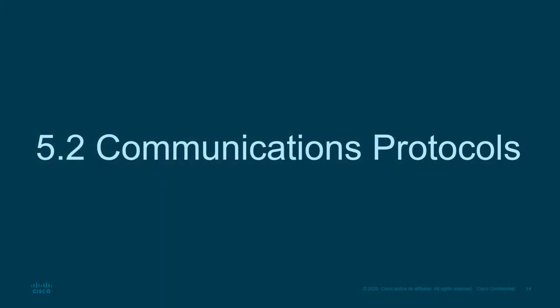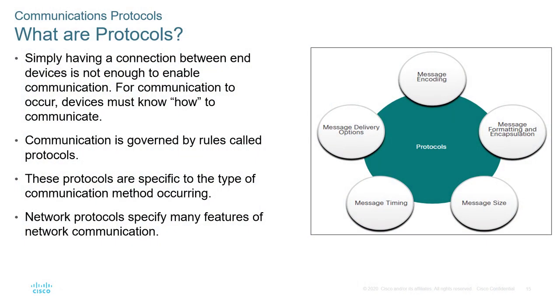We do have a lab tracing routes through web resources. The second section is all about communication protocols — the guidelines, rules, and procedures of communication. Normally, protocols are going to cover things like delivery options, timing, size, formatting, encoding, and encapsulation. These are the main pillars that make up a protocol. The protocol is the guidelines and the rules, and they are specific to the type of communication that's going to be occurring.